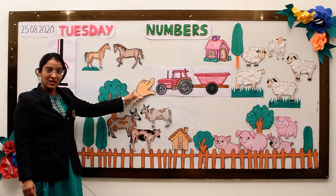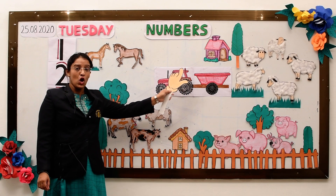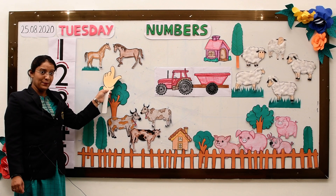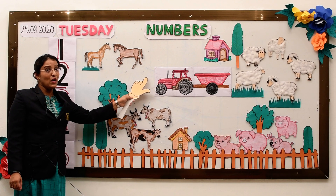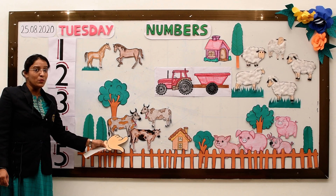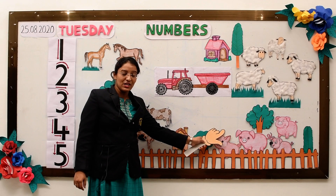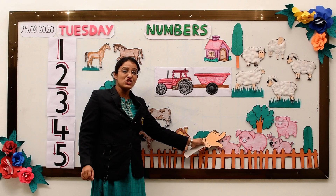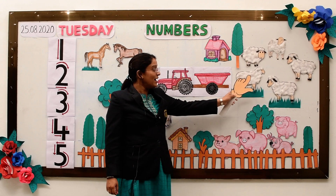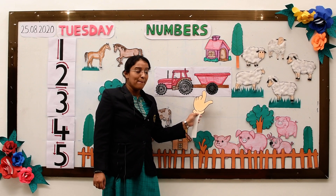One little tractor with work to do, help the animals all day through. Two little horses stop their play, until little tractor brings them hay. Three little cows calls out, Moo moo moo, hello little tractor, how are you? Four little pigs rest in their stay, they stretch and yawn as the tractor drives away. Five little sheep lost in the rain, they follow the tractor back home again.